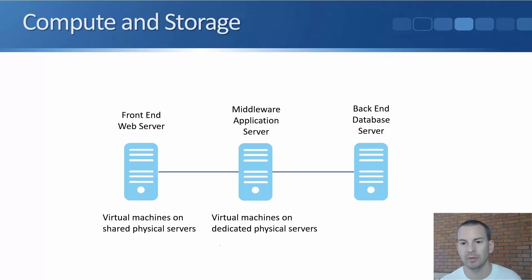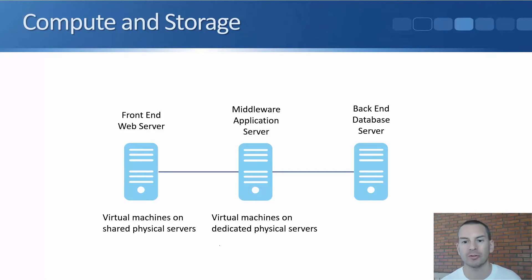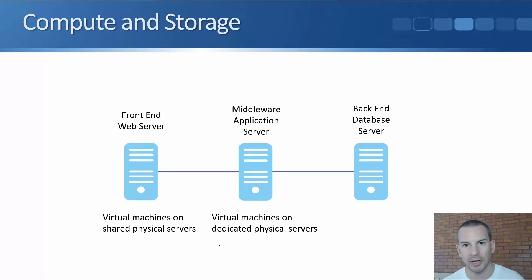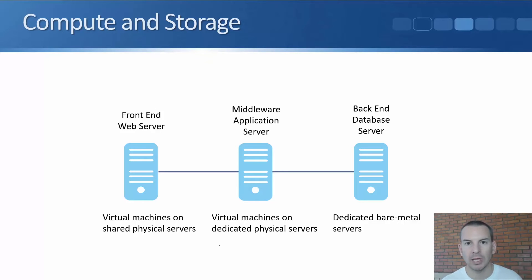The last compute decision is the database server at the back end. For this example, we need a powerful server — a high amount of vCPUs and a lot of RAM. We also have more stringent storage requirements that aren't available on virtual machines from this particular cloud service provider. So we're going to put our back-end database servers on dedicated bare metal servers. That's the compute taken care of.